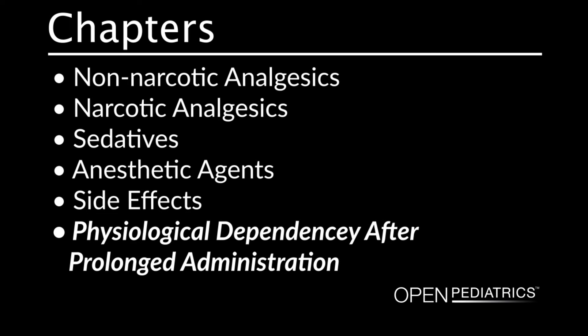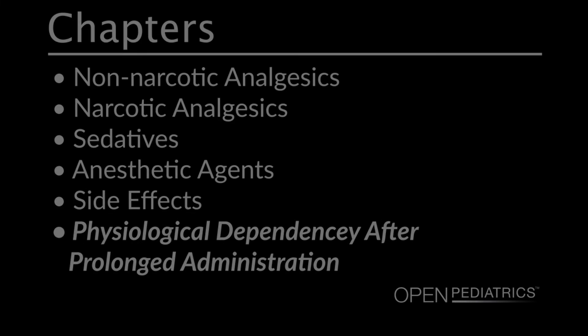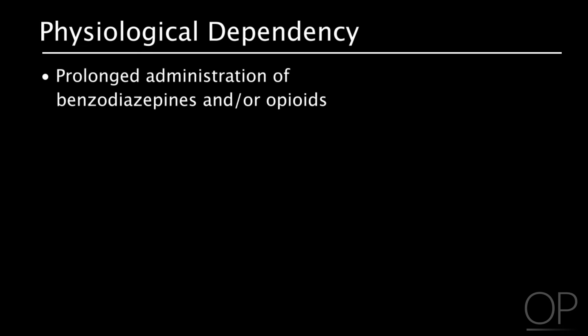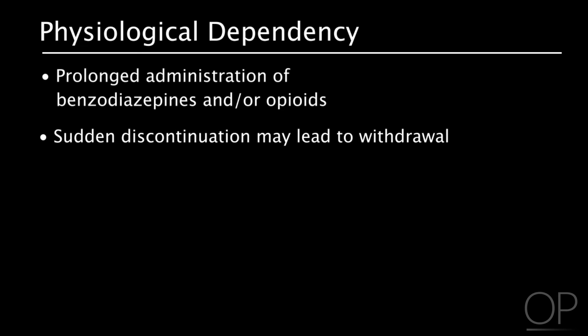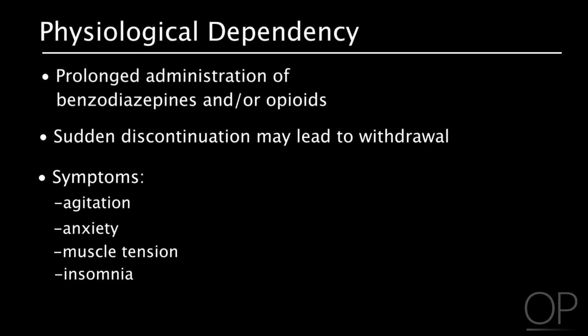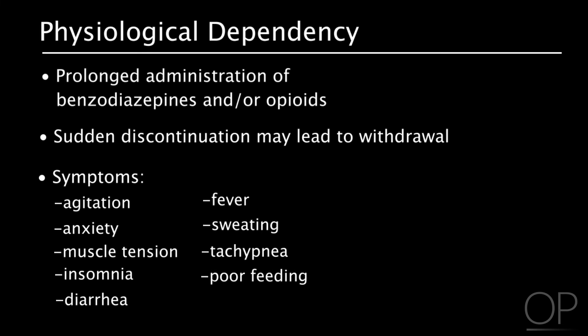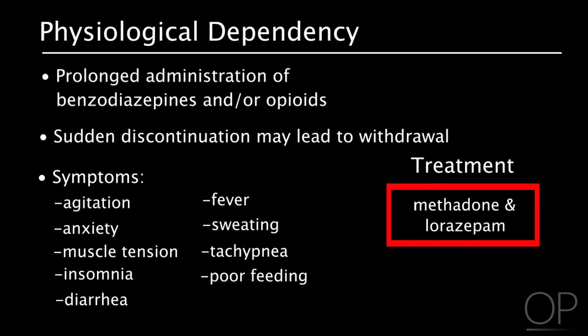Physiological dependency after prolonged administration. Prolonged administration of benzodiazepines and/or opioids to children may induce physiological dependence. Sudden discontinuation of these medications may lead to withdrawal. Symptoms of withdrawal include agitation, anxiety, muscle tension, sleeping for less than one hour, diarrhea, fever, sweating, tachypnea, and poor feeding. Methadone and lorazepam administration can be given to treat withdrawal symptoms.